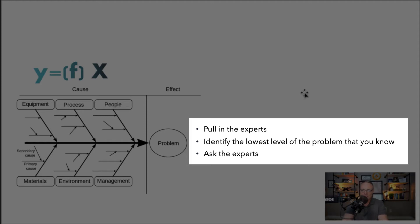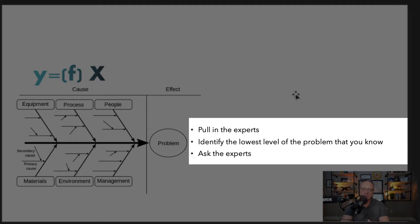Here's where most people stop — they circle a couple they think might be the problem, and then go through the five whys. I don't do that. I don't use the five whys. I don't think in this scenario it's that applicable; it oversimplifies things. I haven't used it in over a decade. What I'm about to show you now is how I do my Ishikawas, and it never fails me. It works on either simple or complex problems. I pull the experts in and have them identify the lowest level of the problem they know. In this scenario we have chatter on the parts — metal airplane parts with chatter because of harmonics, noise transferring through the machine.